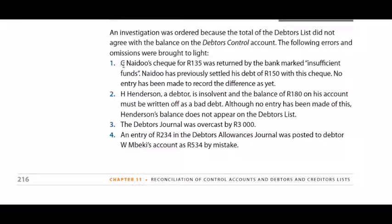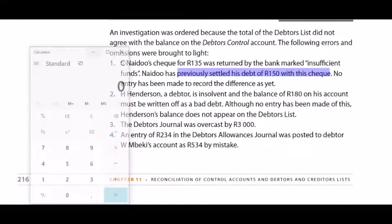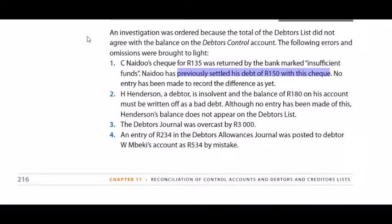Adjustment 1: C Nidu's check for 135 Rand was returned by the bank marked insufficient funds — an RD check. Nidu previously settled his debt of 150 Rand with this check, meaning the business gave the difference of 15 Rand as discount to the debtor. Now that the check is insufficient, the check must be cancelled in the cash book journal and the discount must be cancelled in the general journal. The question is what the accountant did wrong.